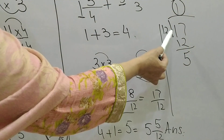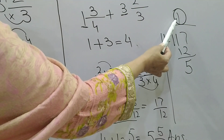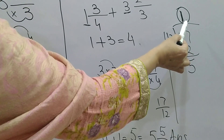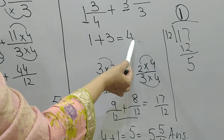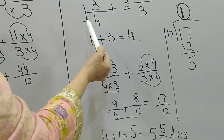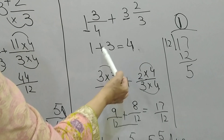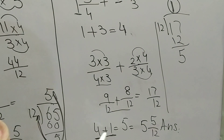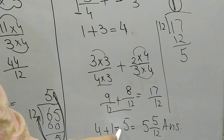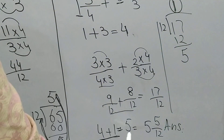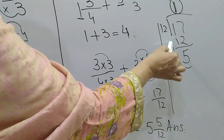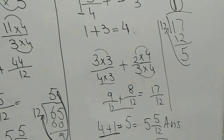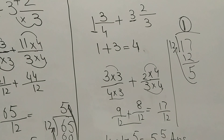Adding 9 and 8 gives 17 by 12. Dividing 17 by 12: 12 ones are 12, remainder 5, so this gives 1 whole 5 by 12. The whole number 1 is added to the earlier whole number sum of 4, giving a total whole number of 5. So the final answer is 5 whole 5 by 12 — the same answer as before. I hope you understood. Thank you, Allah Hafiz.